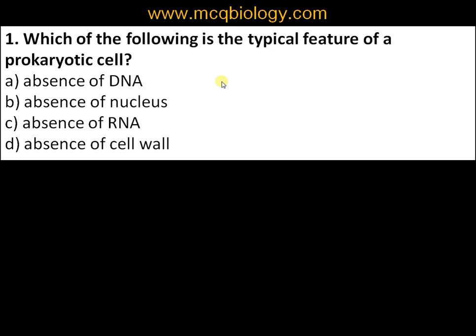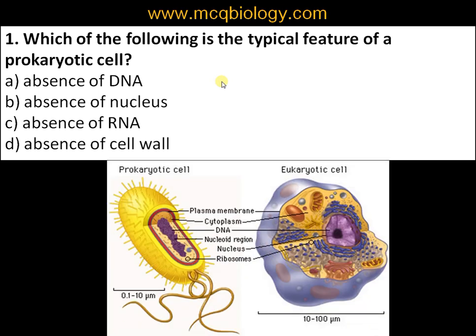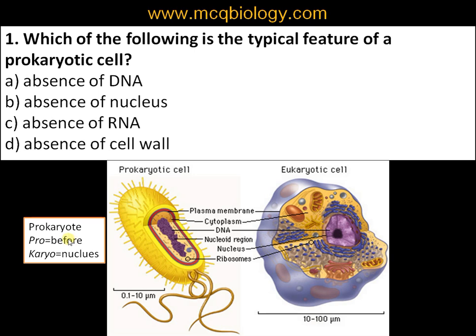Options are: A) absence of DNA, B) absence of nucleus, C) absence of RNA, D) absence of cell wall. The most important criterion for classifying a cell is the presence or absence of a nucleus. In eukaryotic cells, genetic material is surrounded by a nuclear membrane, whereas in prokaryotic cells, genetic material is scattered without a well-defined nucleus. The term 'prokaryote' means 'before nucleus,' so the answer is B) absence of nucleus. DNA, RNA, and cell wall are all present in a prokaryotic cell.